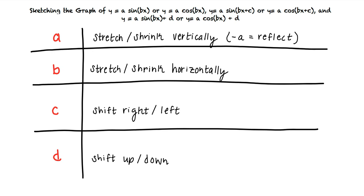Okay, I think I understand these rules. In order to sketch the graph of a sine or cosine function, we start with the general graph that we have memorized the key points of, and then we apply the transformations we have learned to get the points of our new graph. Once we connect all of the new points, we have the final sketch of our graph. Great work! Thank you for joining us!